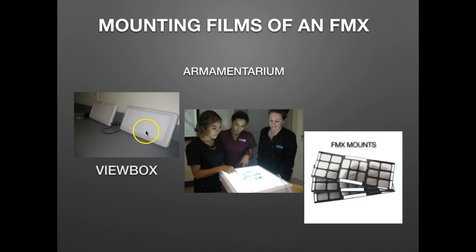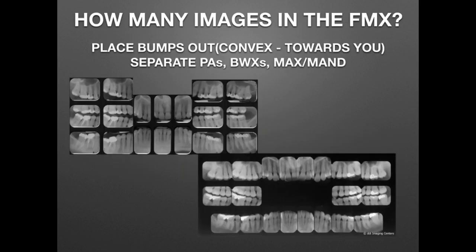There are view boxes, which are lighted boxes — you can see some assistants here using a view box to look at films. Then we have a holder called a film mount, which has little windows for all of the periapicals and bite wings for an FMX. They come in an 18-windowed mount or the 20. One step is to determine how many images you have in the FMX and get the appropriate mount for that FMX.